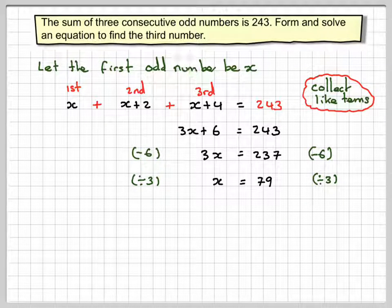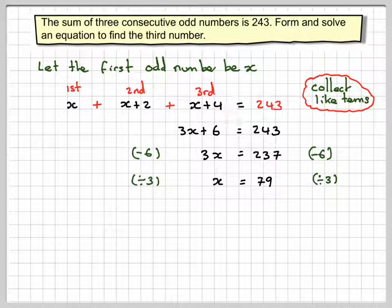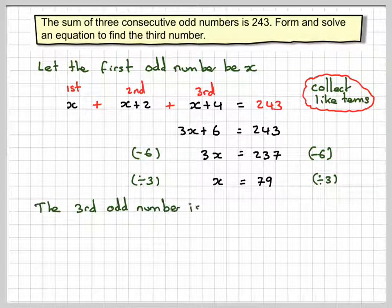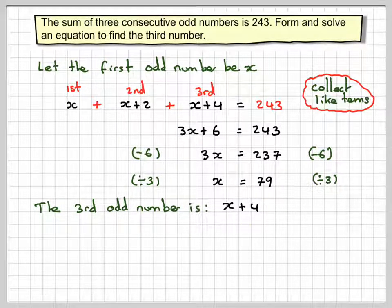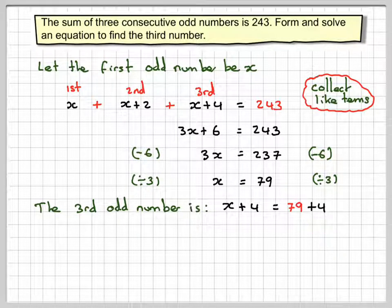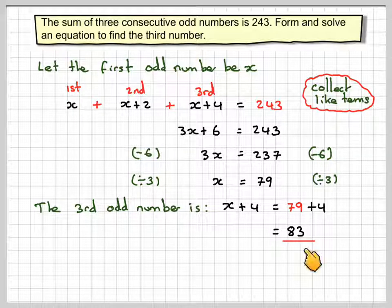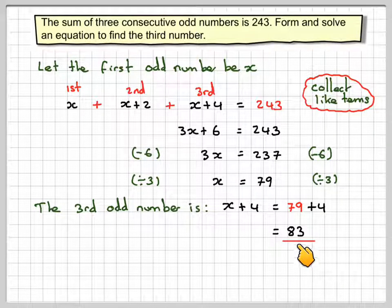We want the third number. So the third number is this one. So the third number is x plus 4. So we put x equal to 79, add 4 to it, and get that the third odd number is going to be 83.